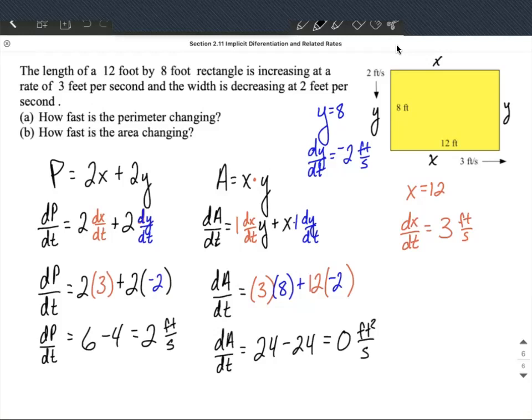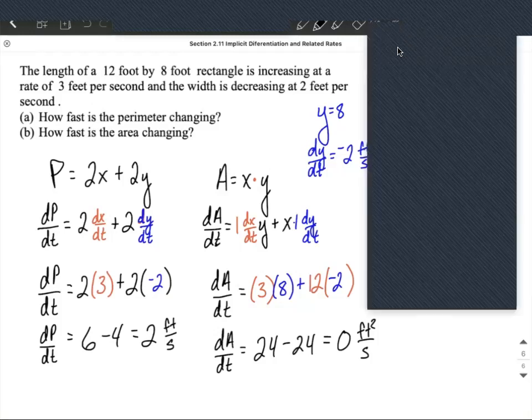I hope this helps out. Shouldn't be too bad. Just label the sides and pick out the correct formula you want to be using in each and every case. Since the area was changing at a rate of 0 feet squared per second, it's not changing at this point. Now it would, perhaps with different dimensions or different rates. Hope this helps out. Good luck with related rates.